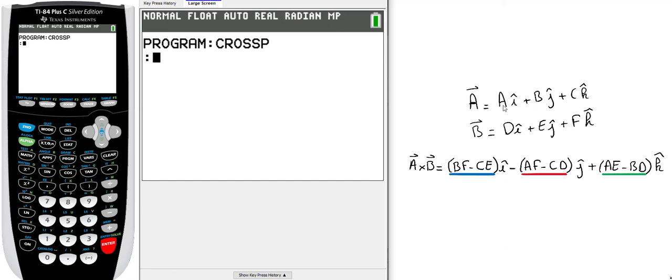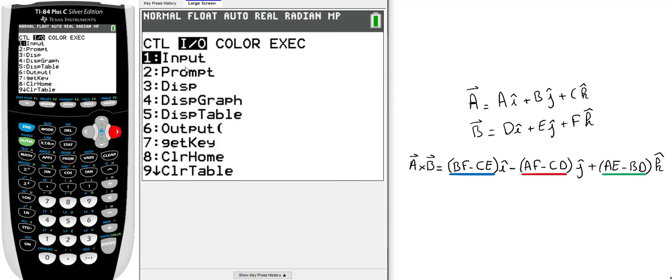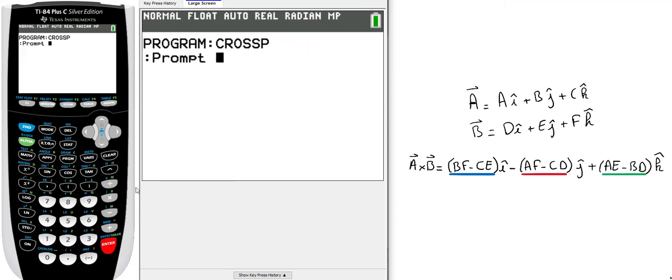The first thing will be to prompt the six parameters: a, b, c, d, e, and f. Click on program, input output I/O, and select prompt. Make sure you select alpha a comma alpha b comma alpha c comma alpha d comma alpha e comma alpha f. That's my three components for vector a and three components for vector b. Press enter.